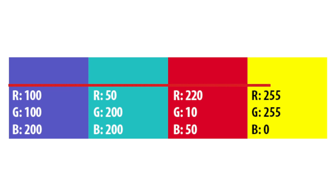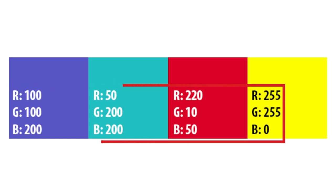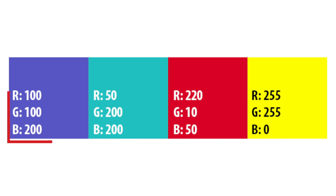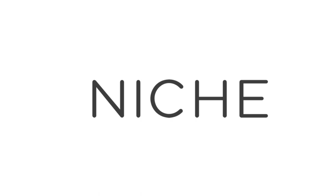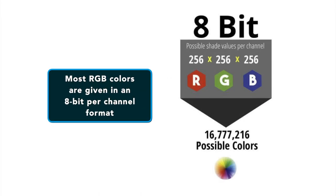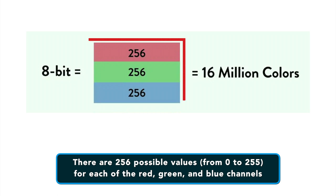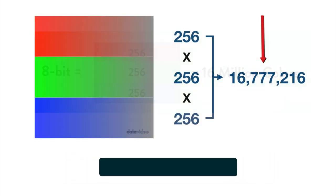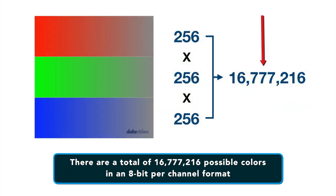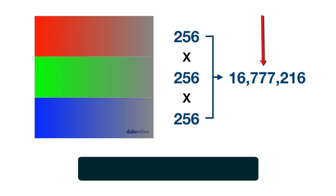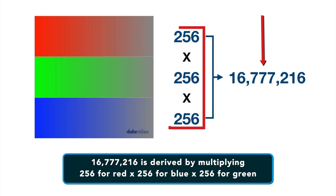In this image you're seeing, you can see how purple, turquoise, a light red and yellow are created by combining different amounts of red, green and blue. Outside of niche professional uses, most RGB colors are given in an 8-bit per channel format. This means that there are 256 possible values from 0 to 255 for each of the red, green and blue channels, providing a total of 16,777,216 possible colors. That number is derived by multiplying 256 for red times 256 for blue times 256 for green, adding up to the 16.7 million plus number.